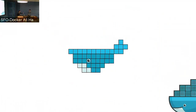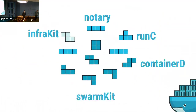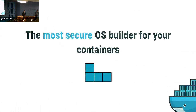Hi everyone, my name is Riaz, I'm a security engineer here at Docker. I want to follow up from Tibor's talk on the Moby project to introduce LinuxKit, our newest project open sourced at DockerCon. Tibor mentioned how Moby assembles components — if you think of the Moby whale, you can split it into components like InfraKit, Notary, SwarmKit, ContainerD, and RunC. The latest addition is LinuxKit, which, as a security engineer, I want to frame as the most secure OS builder for your containers.